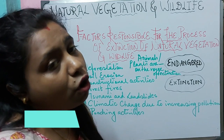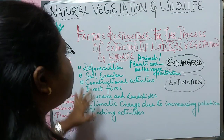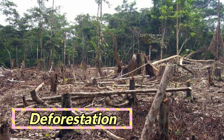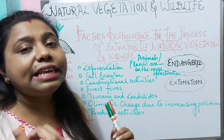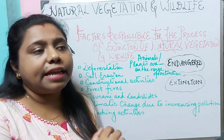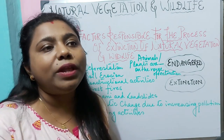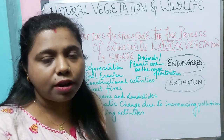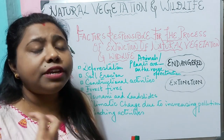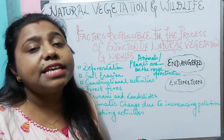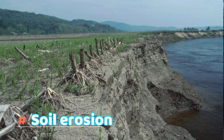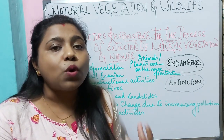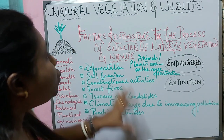Now let us know about the factors leading to the endangerment and extinction of wild animals and natural vegetation. The first factor is deforestation — the cutting down of trees. As trees are cut down it leads to the loss of natural habitat. Just imagine if your house is no more available — that is the situation for wildlife. Deforestation also leads to soil erosion because plants bind the soil, so without plants the soil cannot be protected.